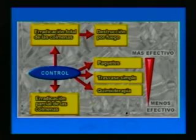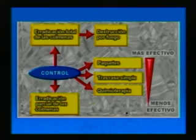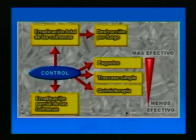El control: si son pocas colmenas podemos hablar de calificación total de las colmenas, destrucción por fuego o erradicación parcial. Cuando hay mucha cantidad de colmenas con un porcentaje muy alto de infección, conviene hacer paquete para tratar de recuperar las abejas, otras bases simples o quimioterapia. Lo más efectivo es el paquete y lo menos efectivo es la quimioterapia.